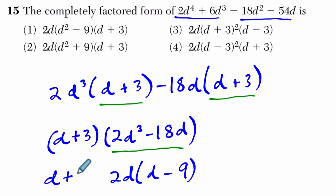So we get d plus 3 times 2d, and this is d squared minus 9. And d squared minus 9 is the difference of two squares.